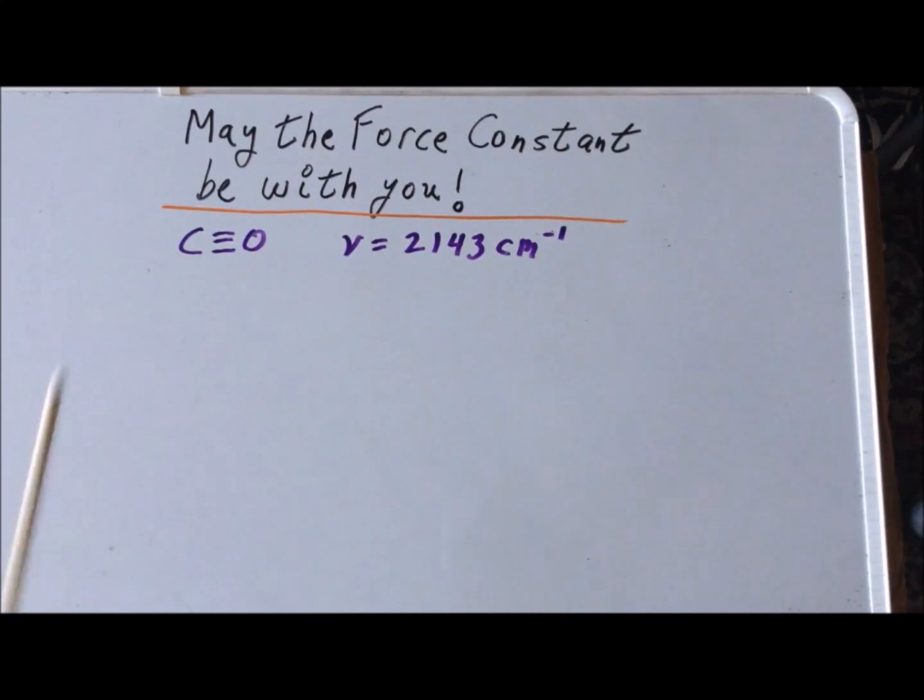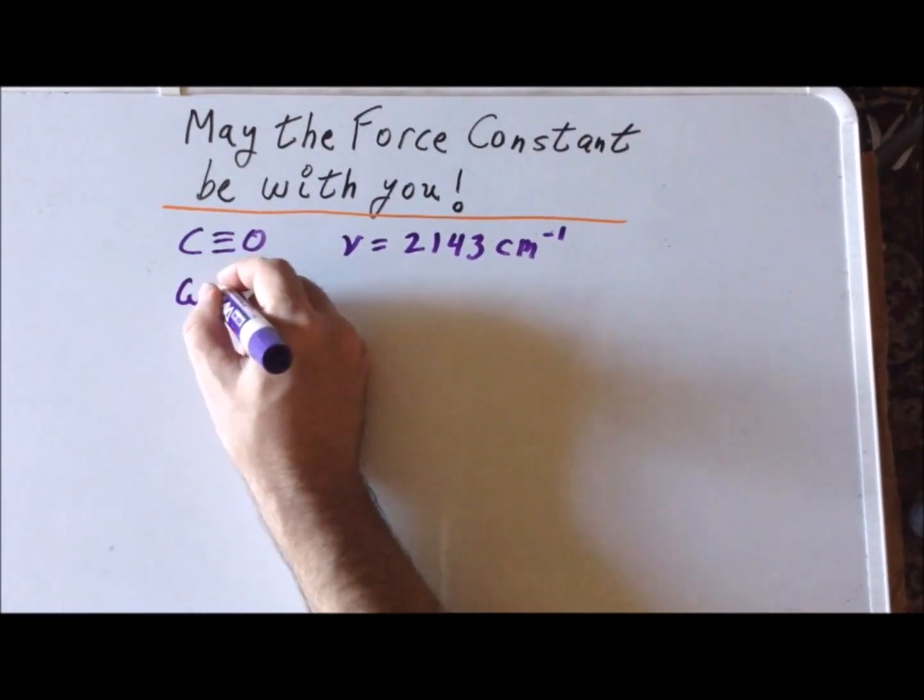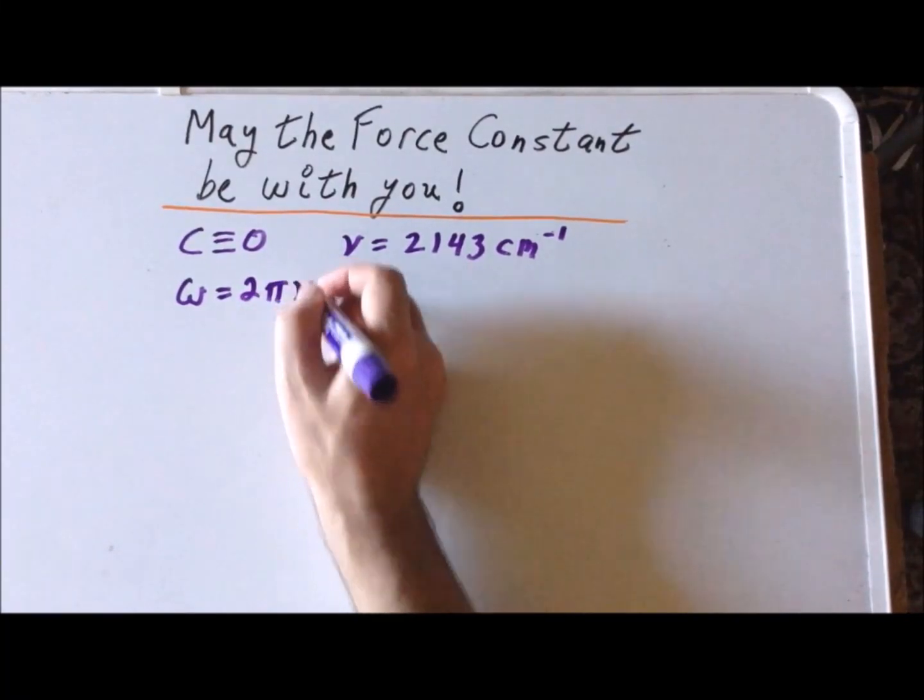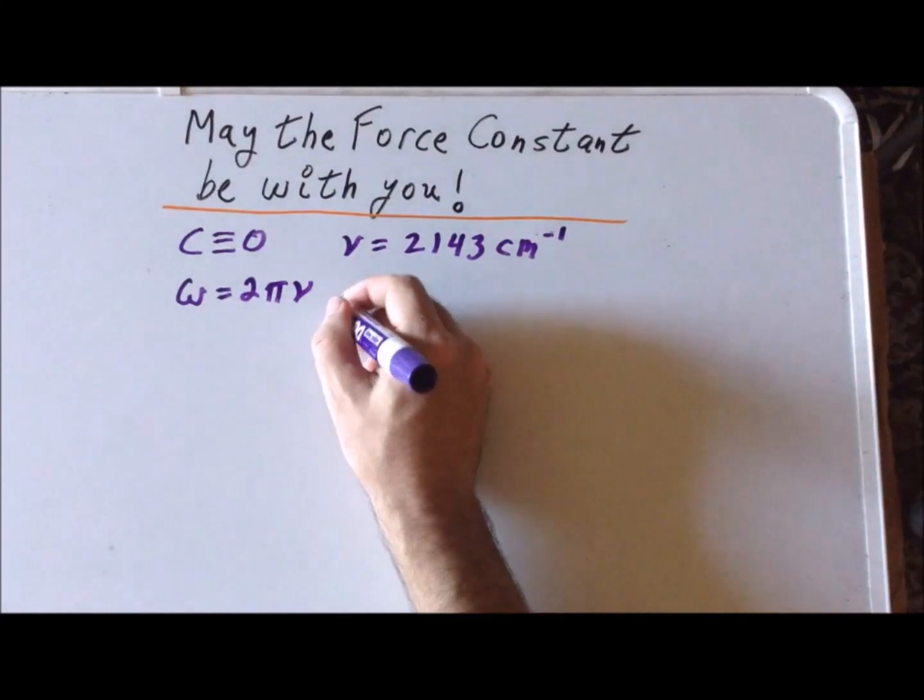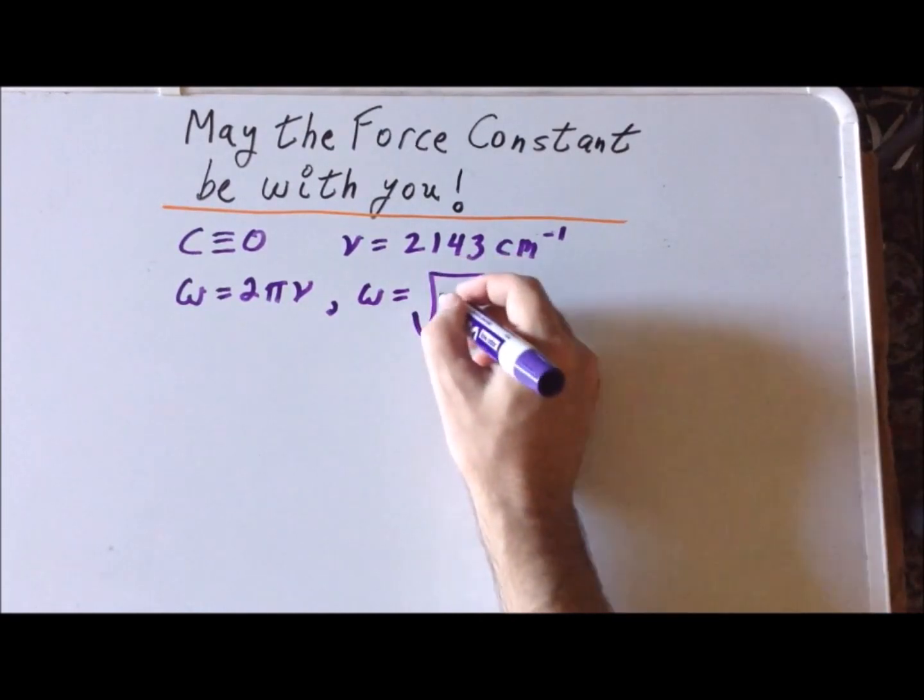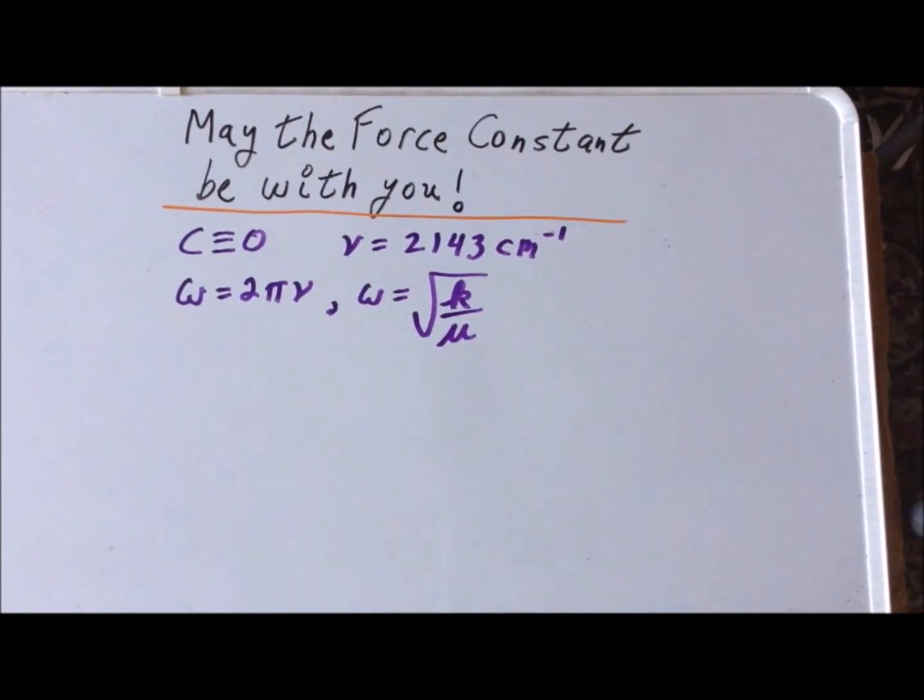Recall that carbon monoxide has the following structure and it vibrates at 2143 wave numbers, where the frequency nu is the linear frequency. Two important formulas are that the angular frequency omega equals 2π times the linear frequency nu, and that omega equals the square root of the force constant k divided by μ, where μ is the reduced mass.